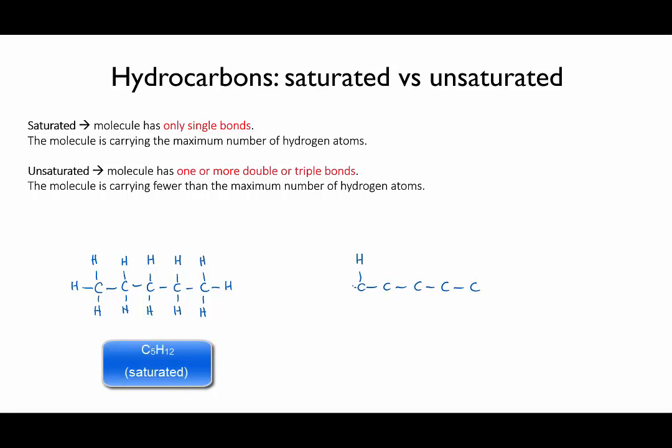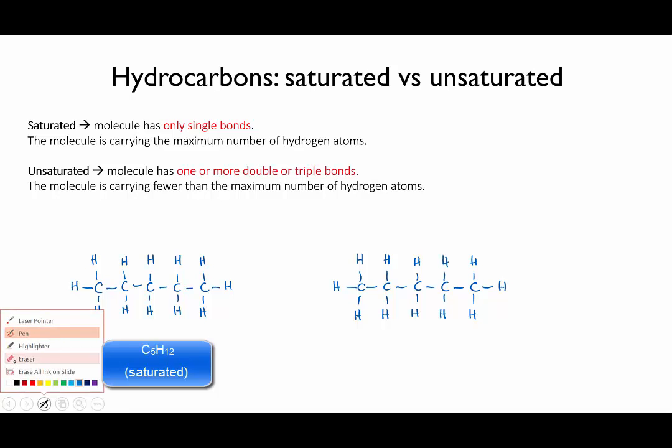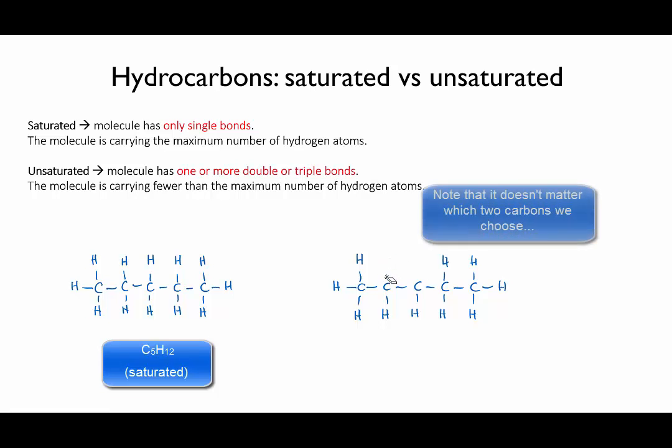However, let's draw it with a double bond between two of the carbon atoms, so it becomes pentene. In order to form this double bond, we need to lose a hydrogen from each of those two carbons in order to free up two electrons to form the new double bond.